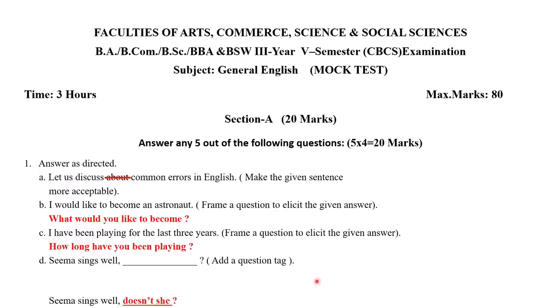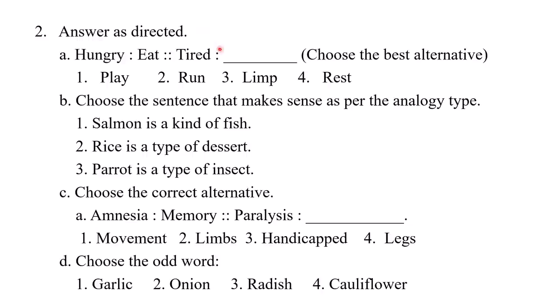D: 'Seema sings well.' Add a question tag. The answer is: 'Seema sings well, doesn't she?' Remember, if the main clause is positive, the question tag will be negative. The contracted form 'doesn't' — with N contracted form of 'not' — should be used.